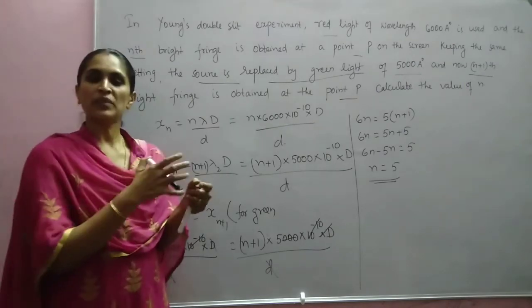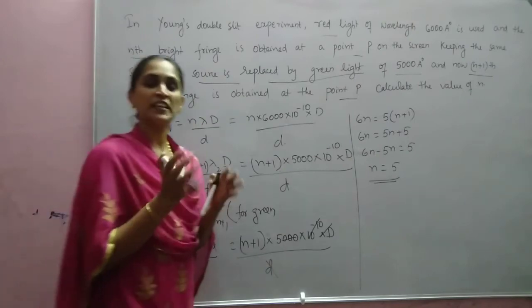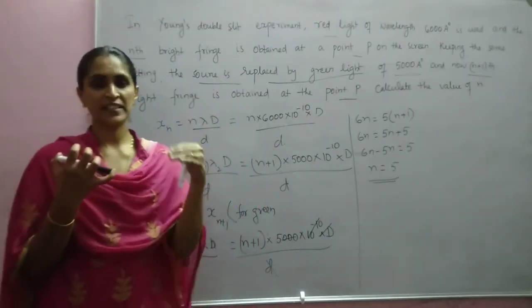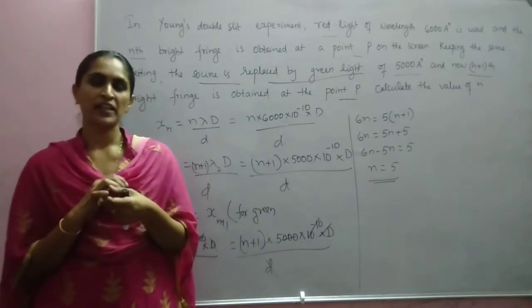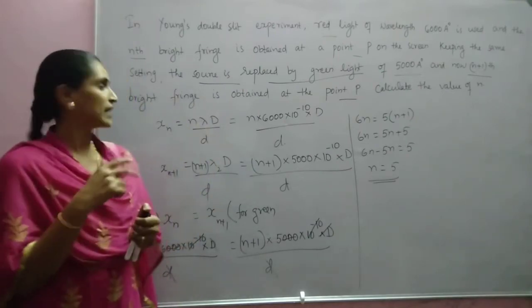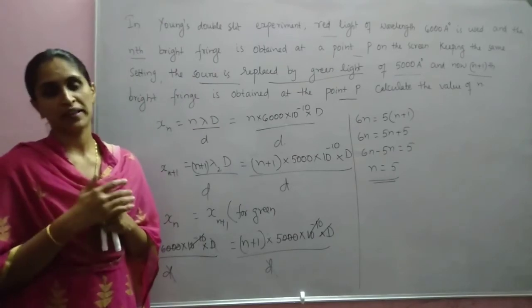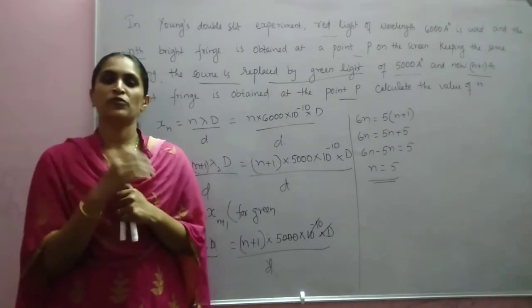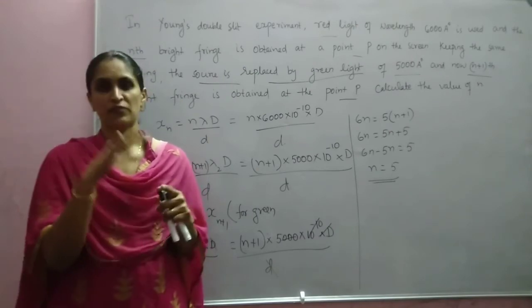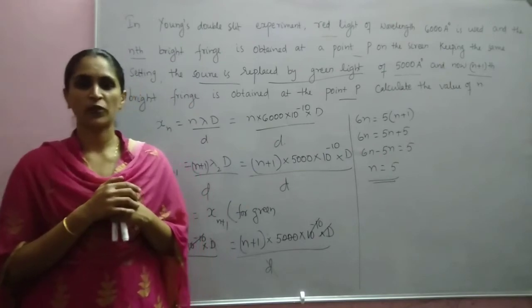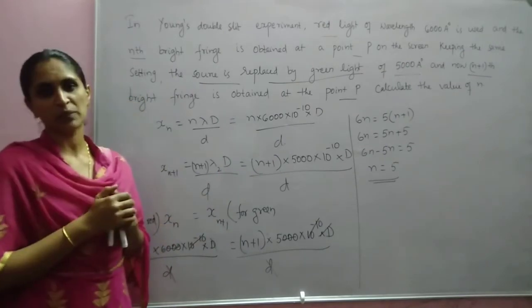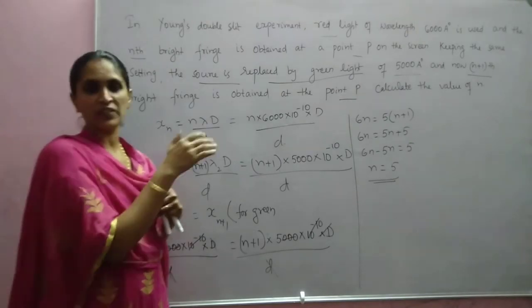Sometimes similar problems ask to find the least distance from the central maximum where two wavelengths coincide. In that case, write n·lambda1·D/d = (n+1)·lambda2·D/d, because for the least distance the first fringe of one wavelength coincides with the adjacent fringe of the other. That case is handled in a similar way.